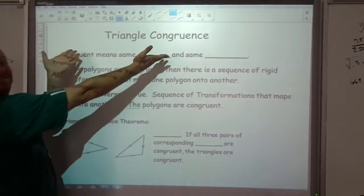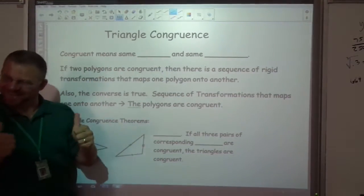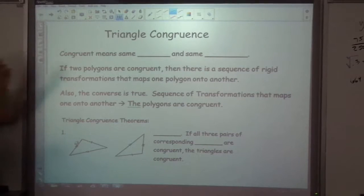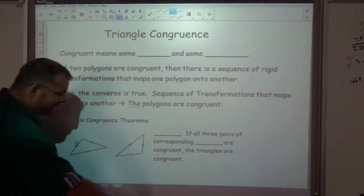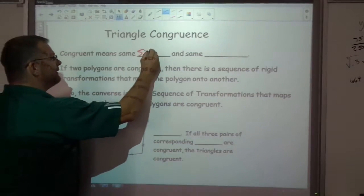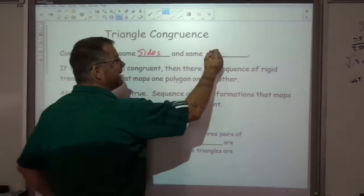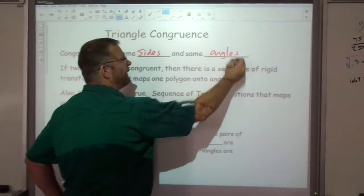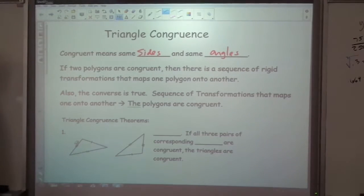Hello and welcome to Triangle Congruence. Congruent means the same sides and the same angles. Both of those have to be the same in order for the triangles to be congruent.